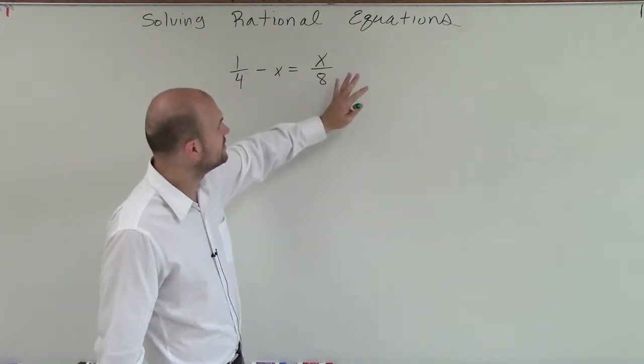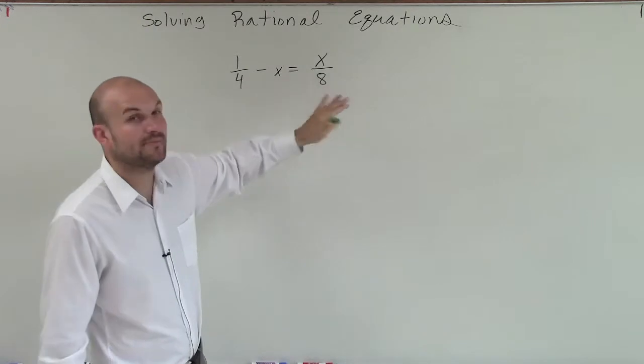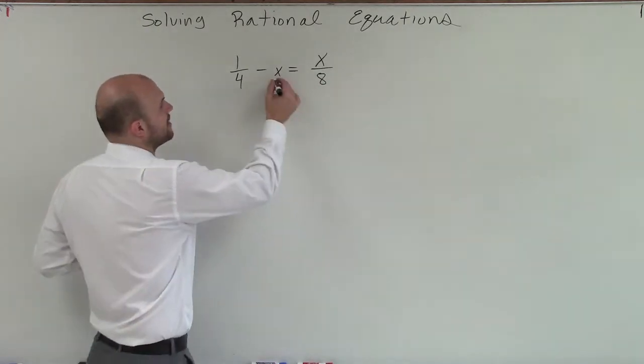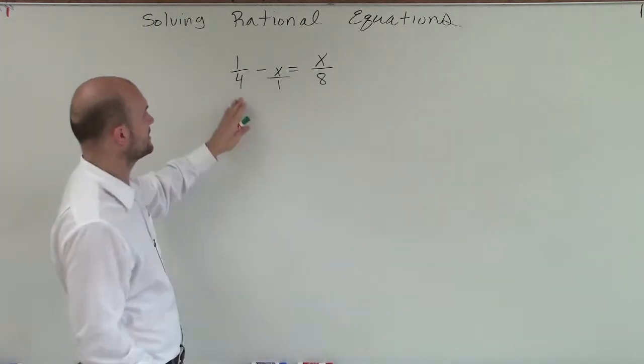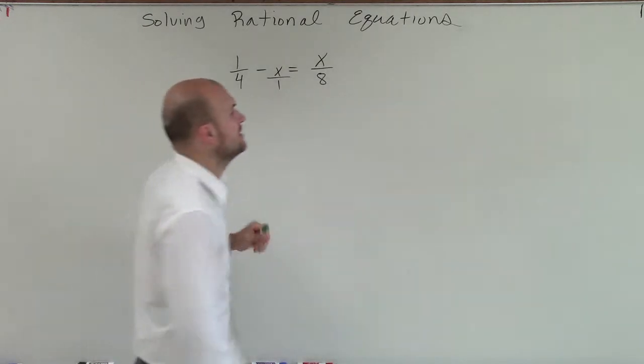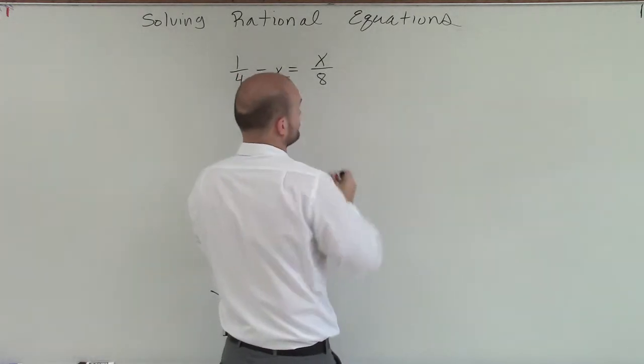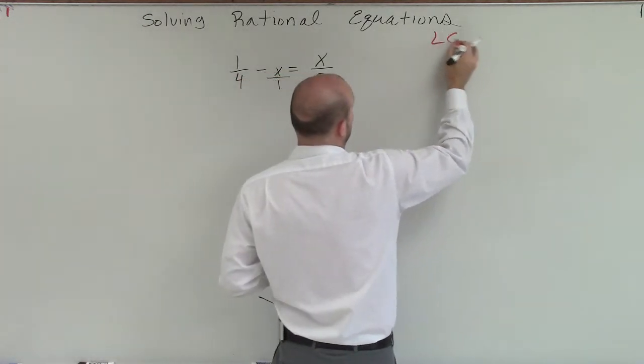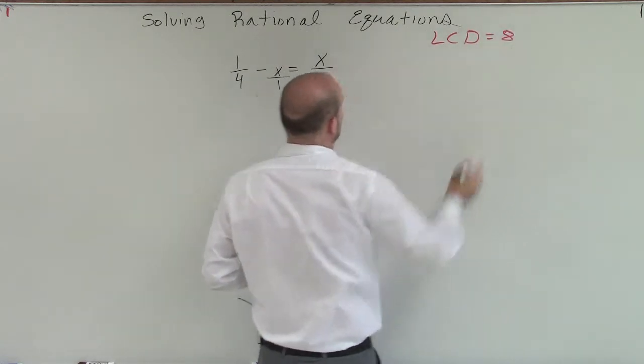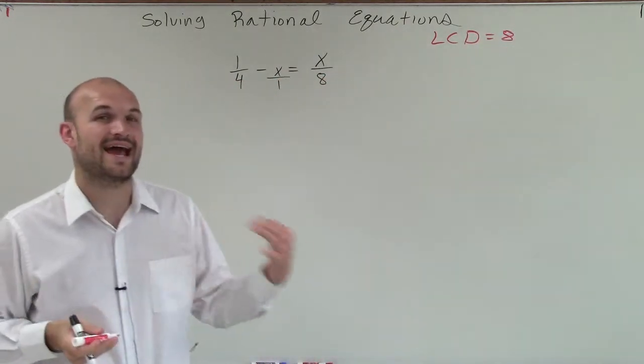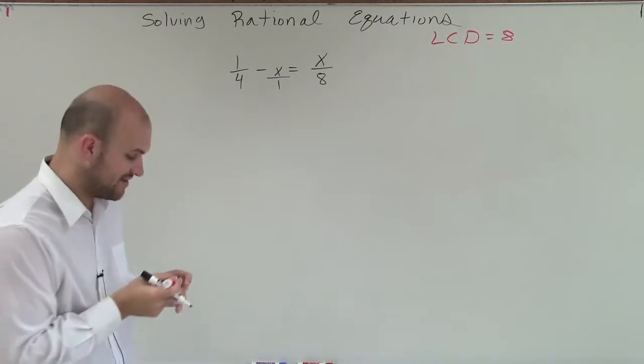So when dealing with rational equations, we need to multiply by the least common denominator by every single term. So I look at this, I have 4, 1, and 8. Therefore, I can determine that my LCD is just going to equal 8, because that's the smallest number that every one of my denominators evenly divides into.